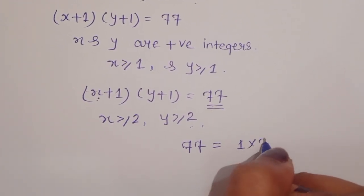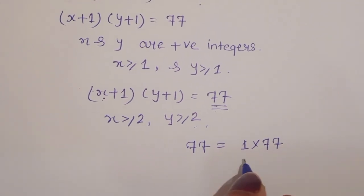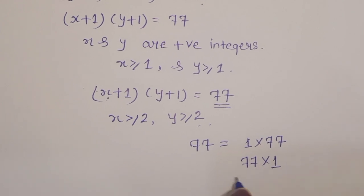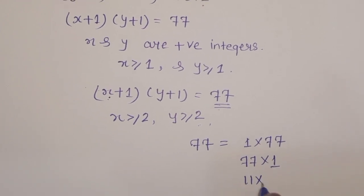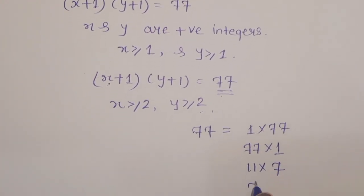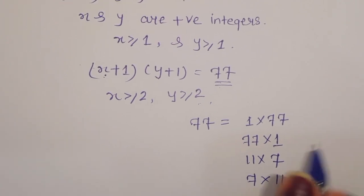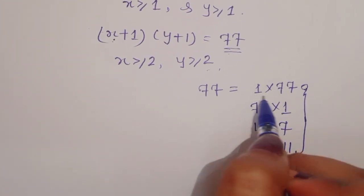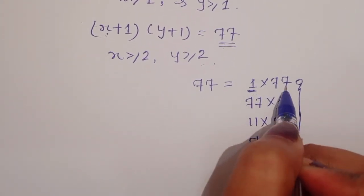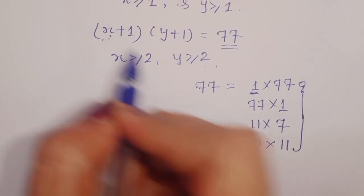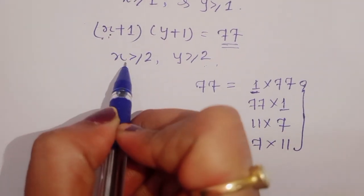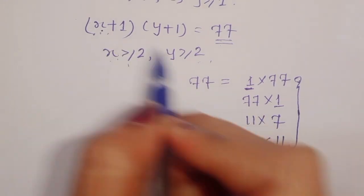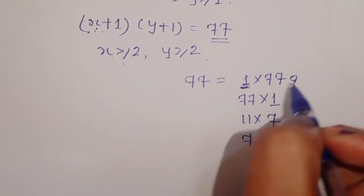Now we find the factors of 77. The factors are: 1 times 77, 77 times 1, 11 times 7, and 7 times 11. If we take the first factor, 1 times 77, then x plus 1 equals 1, which means x equals 0. But the condition requires x plus 1 to be at least 2, so this is not possible.